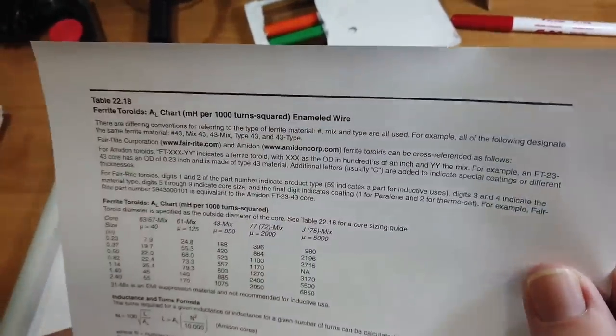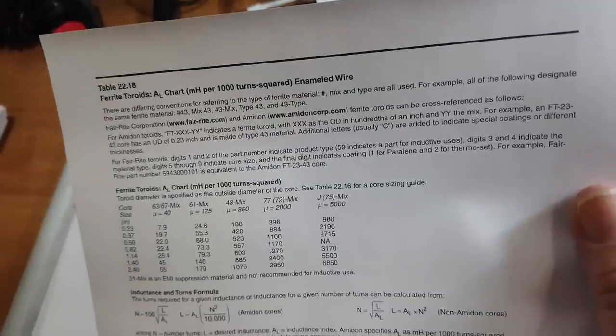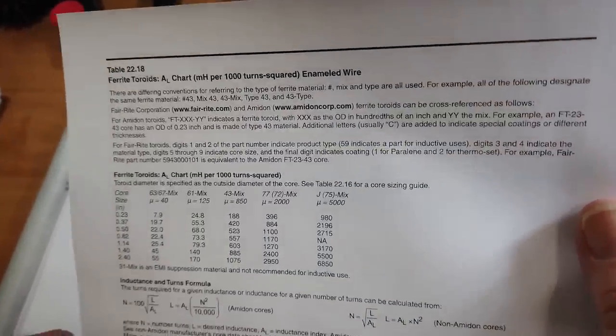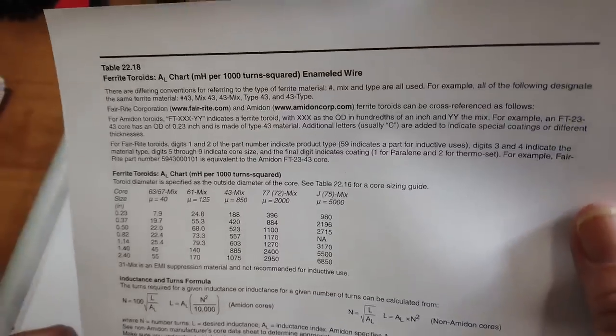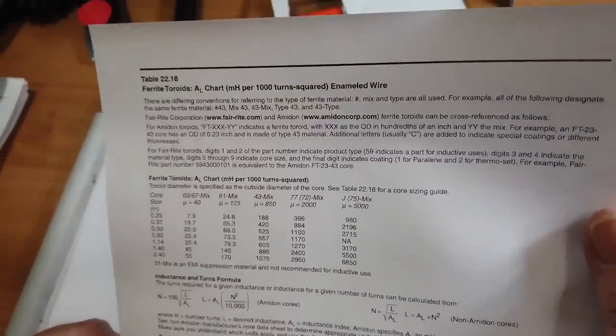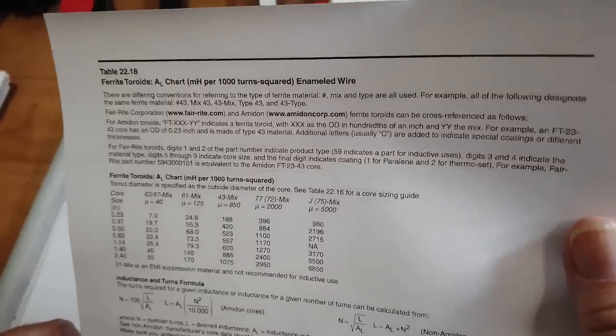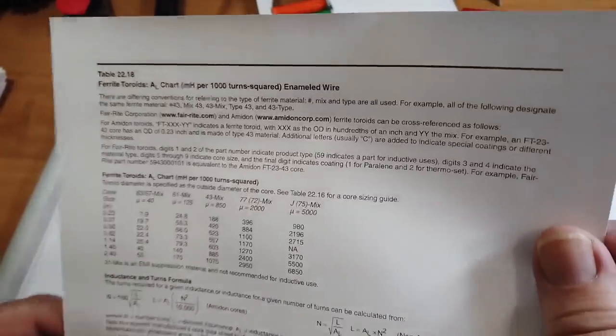These, there are differing conventions referring to type of ferrite material. Number, mix, and type are all used. For example, all of the following designate the same ferrite material. Number 43, mix 43, 43 mix, type 43, and 43 type.